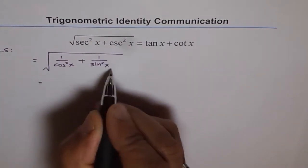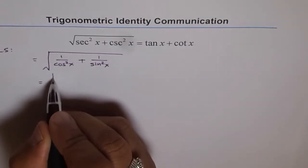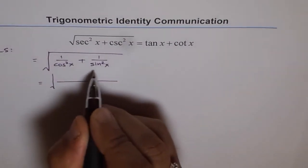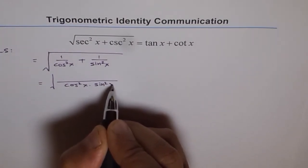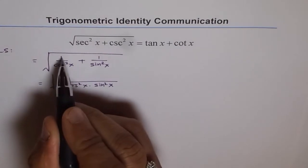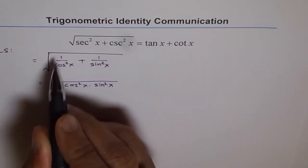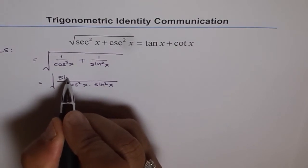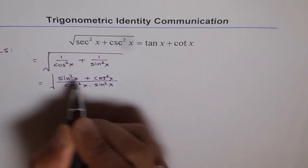Now we can take the common denominator which is cos square x times sine square x. How will you get cos square x times sine square x? You've got to multiply by sine square x. So we get sine square x plus cos square x square root.